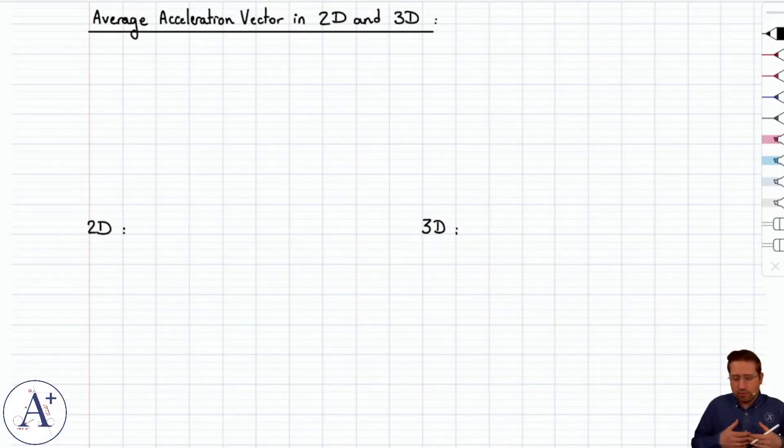The average acceleration vector generalizes just like you would expect it, same thing as the average velocity vector, really just now we're doing it for acceleration.